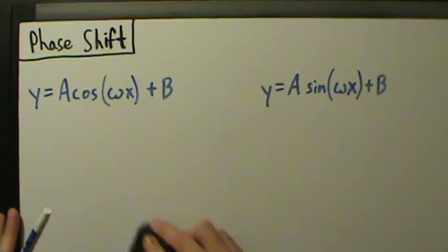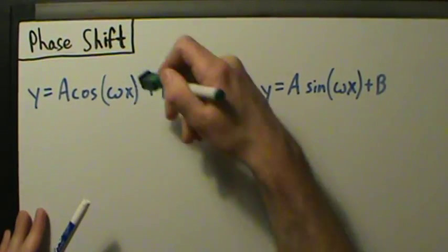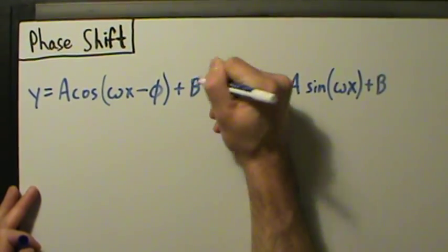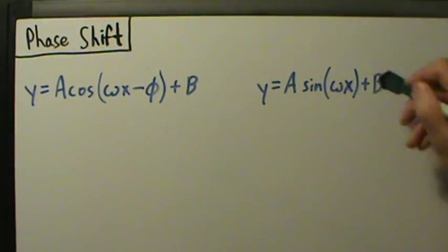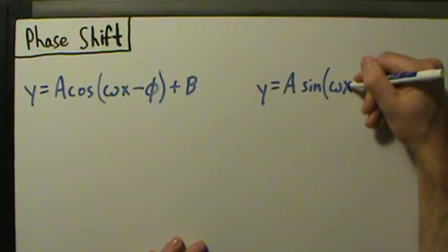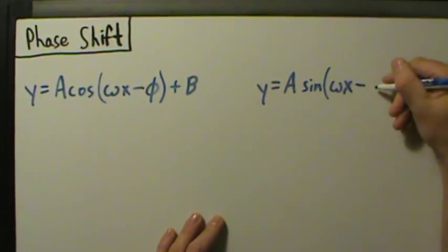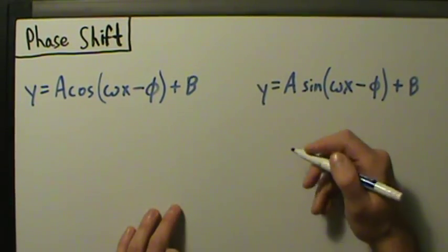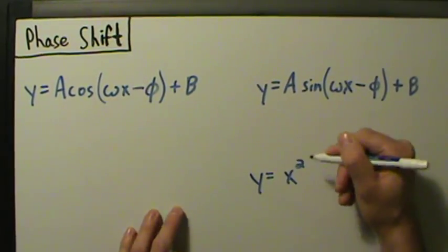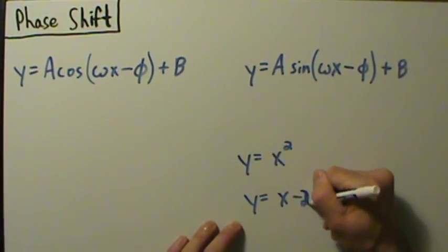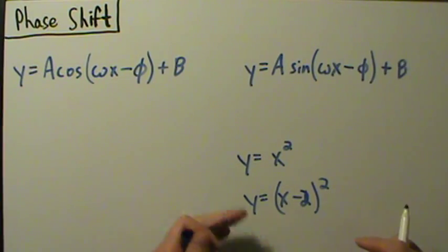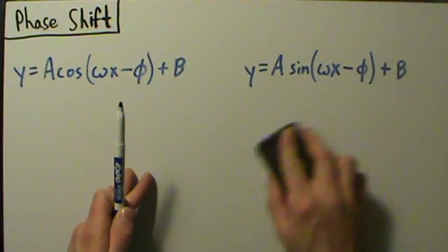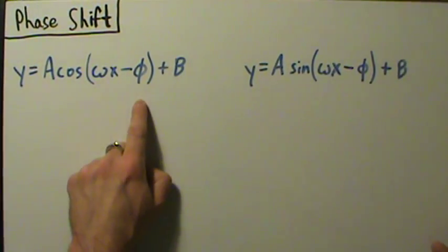We're going to introduce phi and see how it relates to phase shift. This changes our functions: cosine becomes a cosine of omega x minus phi plus b, and sine becomes a sine of omega x minus phi plus b. Remember from precalculus: if you have y equals x squared and want to shift it two units to the right, that's y equals x minus 2 squared. So that minus sign pushes it to the right — which is why we use minus phi. Phi itself could be positive, negative, or zero.